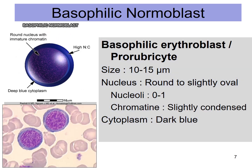The basophilic normoblast is also called the basophilic erythroblast, or prorubricyte. It is 10 to 15 micrometers in size, with a round to slightly oval nucleus. It has 0 to 1 nucleoli with slightly condensed chromatin and dark blue cytoplasm.